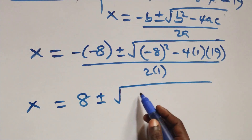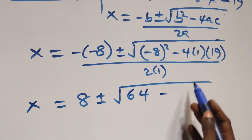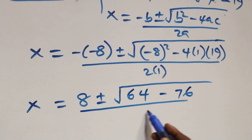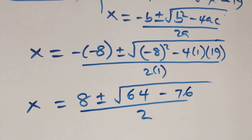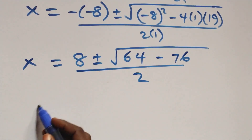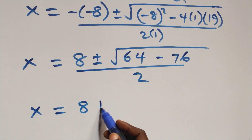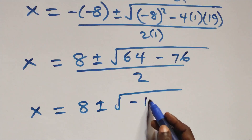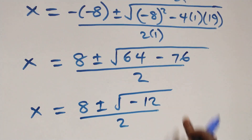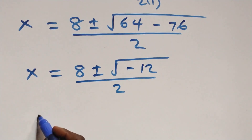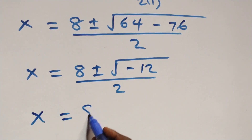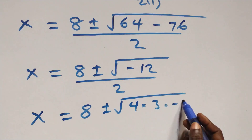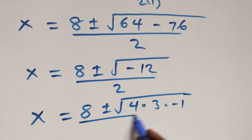Here we have x equals to 8, plus or minus square root of minus 8 squared, we have 64, and minus 4 times 1 times 19, we have 76, all over 2a. Next step here, this becomes x equals to 8, plus or minus square root of 64 minus 76, that gives us minus 12, then over 2. We can write this as x equals to 8, plus or minus square root of 4 times 3 times minus 1, all over 2.